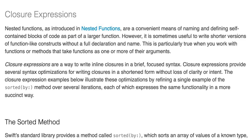Closure expressions: Nested functions are a convenient means of naming and defining self-contained blocks of code as part of a larger function. However, it's sometimes useful to write shorter versions of function-like constructs without a full declaration and name. This is particularly true when you work with functions or methods that take functions as one or more of their arguments. Closure expressions are a way to write inline closures in a brief, focused syntax. Closure expressions provide several syntax optimizations for writing closures in shortened form without loss of clarity or intent. The closure expression examples below illustrate these optimizations by refining a single example of the sorted(by:) method over several iterations, each of which expresses the same functionality in a more succinct way.